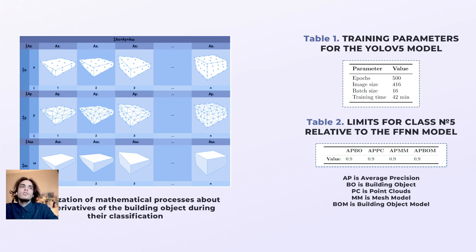The YOLO v5 model is trained in the ratio of 80% training images and 20% test images. Images were separated according to the stage of development of simple building things. Table 1 shows the training parameters for the YOLO v5 model.